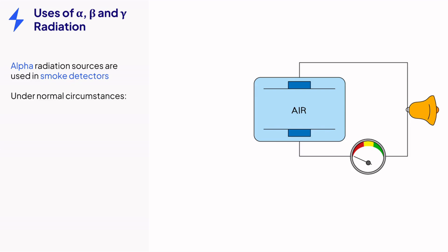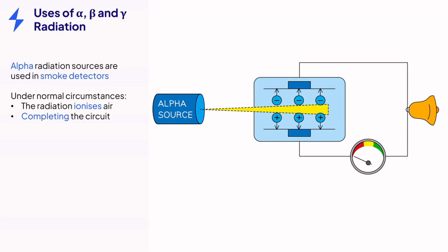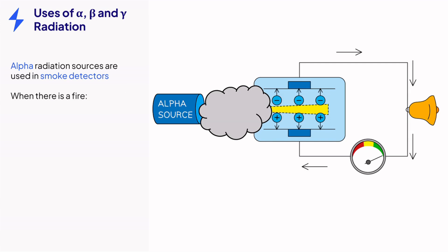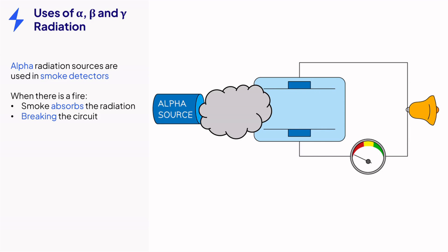One use of alpha that you need to be familiar with is in smoke detectors. When there is no smoke, the alpha radiation ionizes the air, forming charged particles which complete the circuit of the smoke detector. A fire produces smoke which absorbs the alpha particles so the air is no longer ionized. The circuit is broken so current no longer flows causing the alarm to ring.